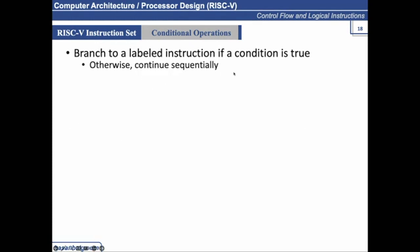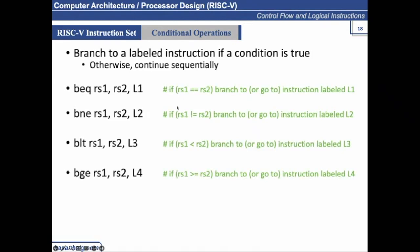If the instruction condition is true, it branches or jumps to a certain location of the code. Otherwise, it continues sequentially. So we have these branch instructions.